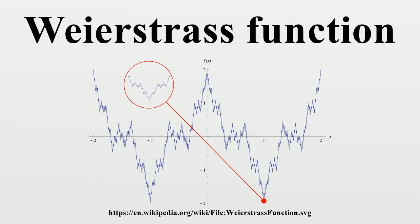In mathematics, the Weierstrass function is an example of a pathological real-valued function on the real line. The function has the property of being continuous everywhere but differentiable nowhere. It is named after its discoverer, Carl Weierstrass.